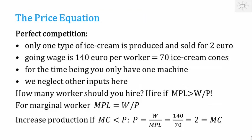That was the production function; now we come to the price equation. Let us start with the case of perfect competition. Imagine an economy where only one good — ice cream — is produced, sold for 2 euros per cone, and the going wage is 140 euros per worker per day. That means the real wage corresponds to 70 ice cream cones: 140 divided by 2.